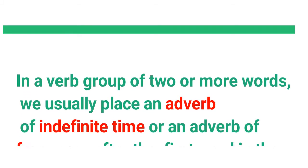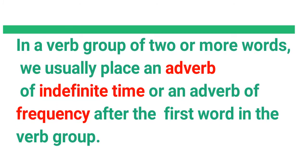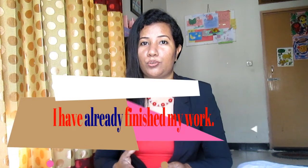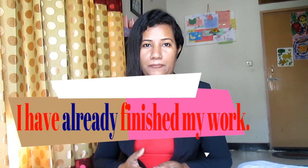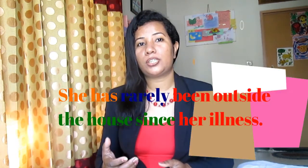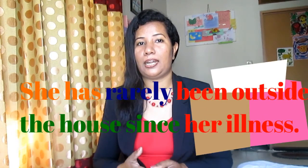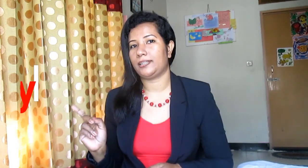In a verb group of two or more words, we place an adverb of indefinite time or an adverb of frequency after the first word in the verb group. For example, 'I have already finished my work' — so 'already' is the adverb. Another example: 'She has rarely been outside the house since her illness' — so 'rarely' is the adverb.